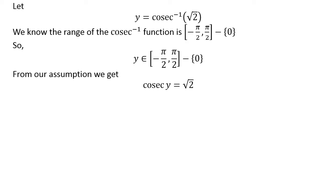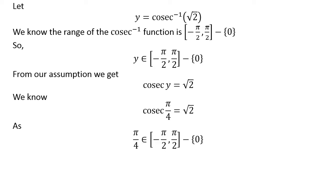Applying the properties of inverse functions, we can rewrite y equals inverse of cosecant of square root of 2 as cosecant of y equals square root of 2. We know cosecant of pi upon 4 is equal to square root of 2. And pi upon 4 lies in the closed interval of minus half of pi and half of pi, except 0.